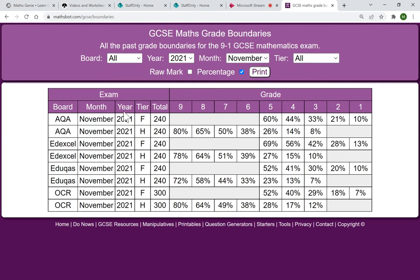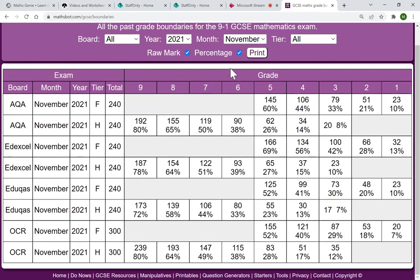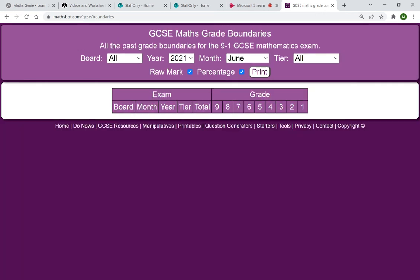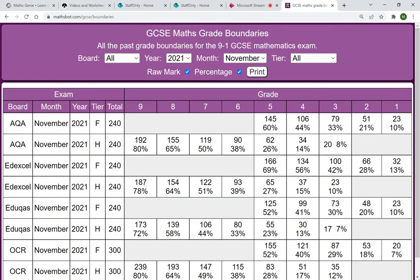Edexcel is at 240, AQA 240, and then OCR 300. Never come across EDUQAS at all. You can also look at both of them at the same time as well. And then choose your month, choose your year.